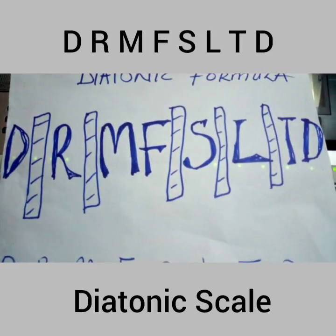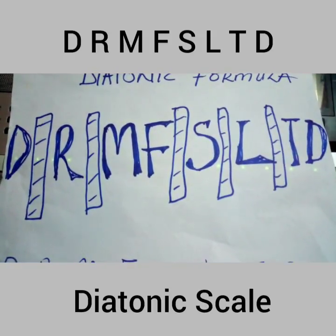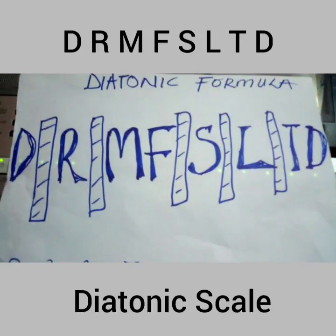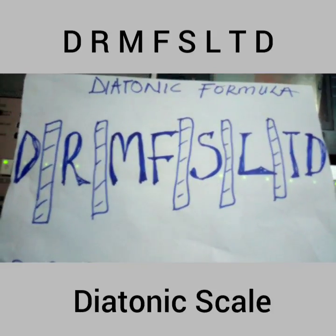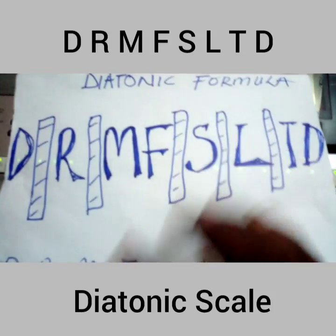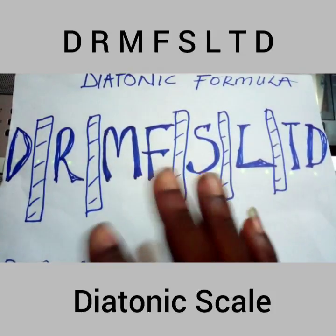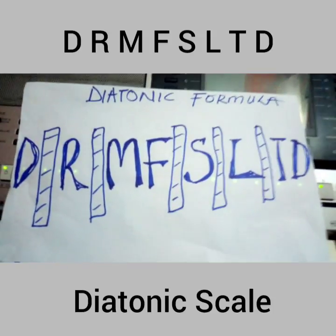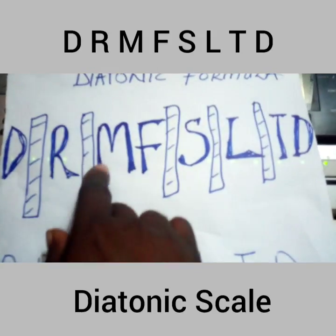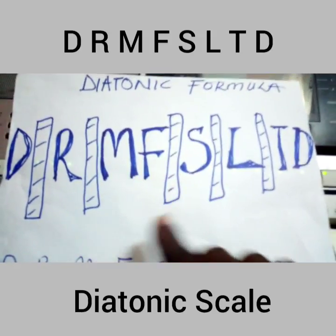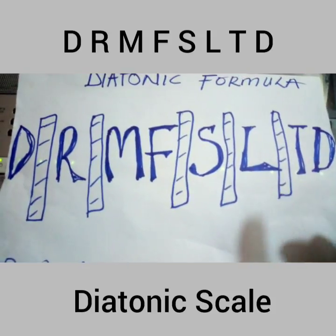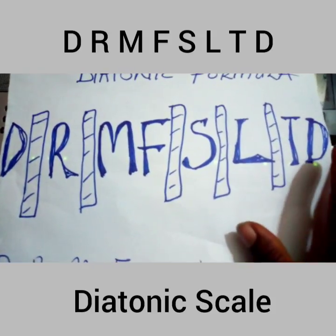If you observe well, you will see that your Mi, Fa and your Ti, Do — they are together. There is nothing in between them. If you can memorize this formula, you can run it freely on your keyboard without any problems. So: Do — skip one to get Re, skip one to get Mi, Mi and Fa are together, skip one to get Sol, skip one to get La, skip one to get Ti, and Ti and Do are together.